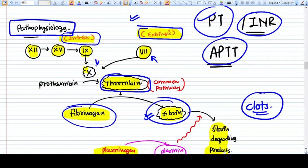Factor 7, with the help of factor 5, will activate factor 10, and that factor 10 will in turn activate thrombin. So in extrinsic pathway, the factors involved are factor 7, factor 5, factor 10, and thrombin.